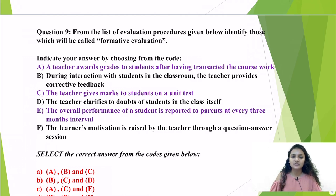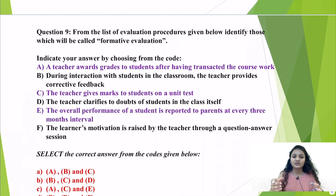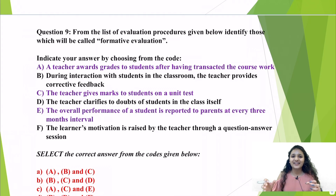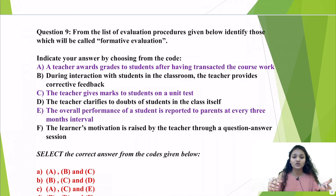In formative evaluation, during the teaching process, the teacher asks questions so they can understand what understanding has been gained by the students. Summative evaluation, on the other hand, is an end process — it measures outcomes by assigning test scores and grades. Parent-teacher meetings held every three months in school are an example of summative evaluation.